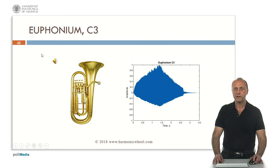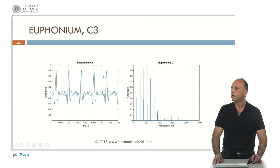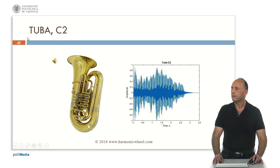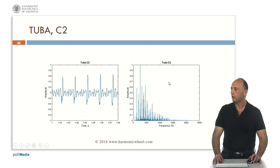Euphonium, C3. Envelope, waveform and the spectrum. Tuba, C2. Again the envelope, waveform and the spectrum, with many harmonics.